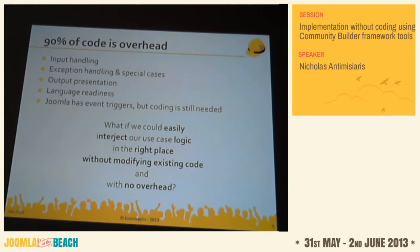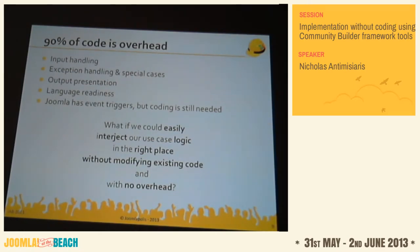90% of the code is overhead — you have to handle input, exception handling, special cases. Hackers don't think about this; they just satisfy the customer and move on. For language readiness, to write a single Joomla plugin you might need six or seven files — even the Hello World plugin requires six or seven files — so there's a lot of overhead to doing things right.